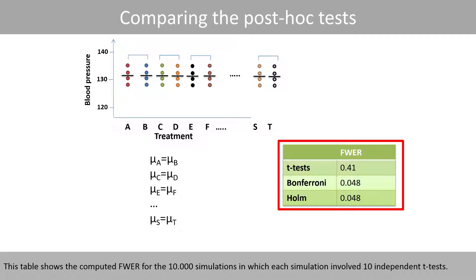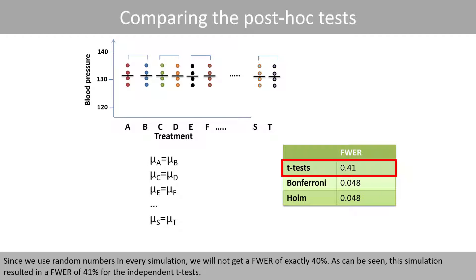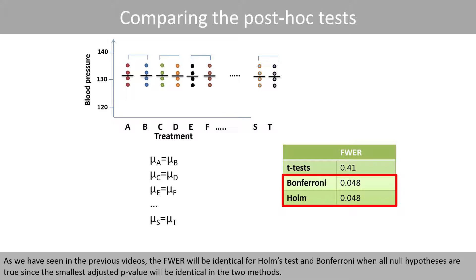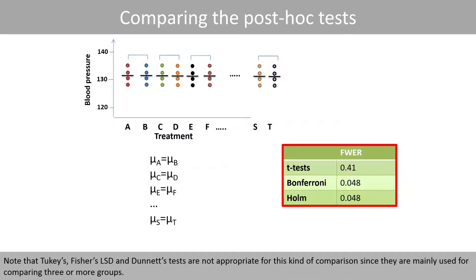This table shows the computed family-wise error rate for the 10,000 simulations, in which each simulation involved 10 independent t-tests. Since we use random numbers in every simulation, we will not get exactly 40%. This simulation resulted in a family-wise error rate of 41% for the independent t-tests. However, by applying the Bonferroni or the Holm test, the family-wise error rate stays around the expected level of 5%. The family-wise error rate will be identical for Holm and Bonferroni when all null hypotheses are true, since the smallest adjusted p-value will be identical in the two methods. Note that Tukey's, Fisher's LSD, and Dunnett's tests are not appropriate for this kind of comparison, since they are mainly used for comparing three or more groups.